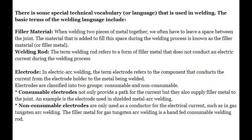Electrode: In electric arc welding, the term electrode refers to the component that conducts the current from the electrode holder to the metal being welded. Electrodes are classified into two groups — consumable and non-consumable. Consumable electrodes not only provide a path for the current but they also supply filler metal to the joint; an example is the electrode used in shielded metal arc welding. Non-consumable electrodes are only used as a conductor for the electrical current, such as in gas tungsten arc welding.